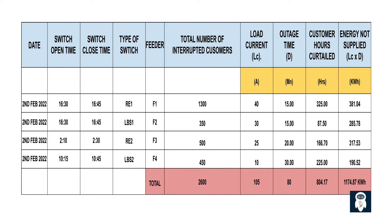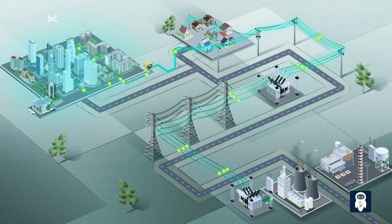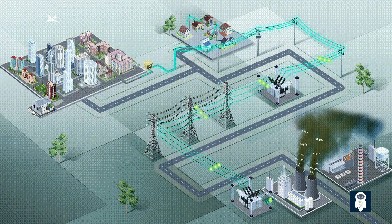By monitoring SAIFI and SAIDI over time, utility companies can identify areas of the distribution network that may be prone to frequent interruptions or longer durations of outages. This information helps them prioritize maintenance and upgrade activities in those areas to improve reliability and customer satisfaction. Furthermore, lower SAIFI and SAIDI values demonstrate the utility company's commitment to providing a reliable power supply, which can enhance customer satisfaction and trust. Customers are more likely to be satisfied when they experience fewer interruptions and shorter durations of power outages. Utilities can track these indices over time and compare them to industry benchmarks to identify areas for improvement or invest in infrastructure upgrades.